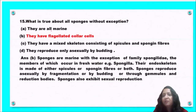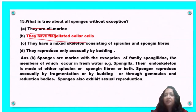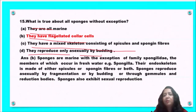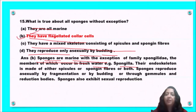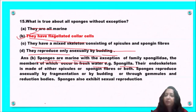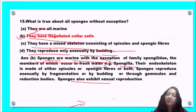Next question: what is true about all sponges without exception — they are all marine; they have flagellated collar cells; they have mixed skeleton of spicules and spongin fibers; or they reproduce only asexually by budding? Sponges are mostly marine, with the exception of members of Spongillidae which occur in freshwater. Option B is the correct answer — they have flagellated collar cells. Sponges also exhibit sexual reproduction, not only asexual budding.